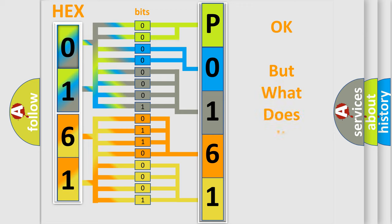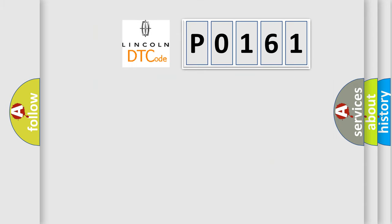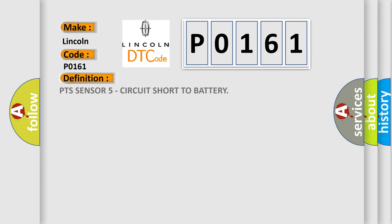We now know in what way the diagnostic tool translates the received information into a more comprehensible format. The number itself does not make sense to us if we cannot assign information about what it actually expresses. So, what does the diagnostic trouble code P0161 interpret specifically? Lincoln car manufacturers. The basic definition is: PTS sensor 5 circuit short to battery.